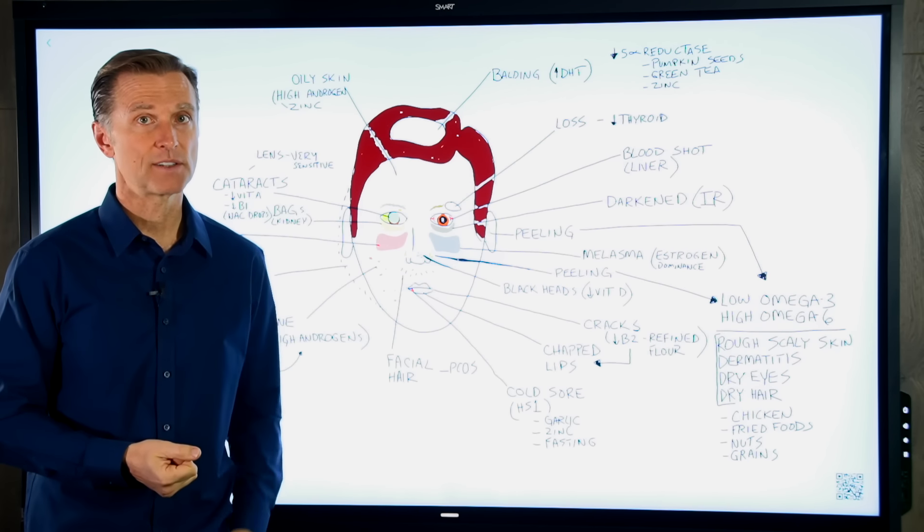And then give the person probiotics. What's the best probiotic? Sauerkraut, because it has the prebiotic and the probiotic. But you can also take probiotics as a supplement. But it's been very effective to help this redness in the cheeks.